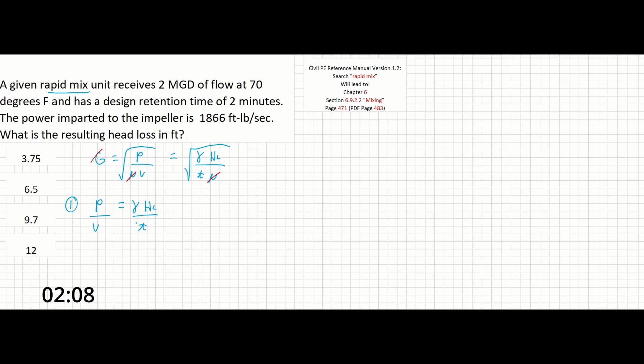Plugging in our unknowns, we can write as follows. Power equals 1866 foot-pound per second. Volume we don't know yet, but we can solve for. And on this other side of the equation, gamma we can also find, which we'll do in a moment. Head loss is what we're solving for. And T is time given in seconds. We're given it up here in minutes, so two minutes times 60 seconds is going to be 120 seconds.